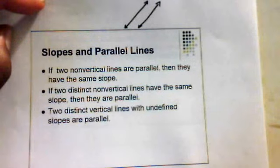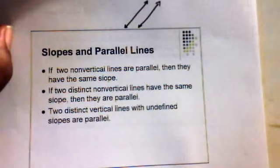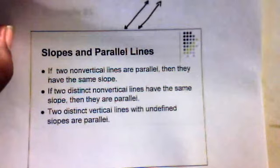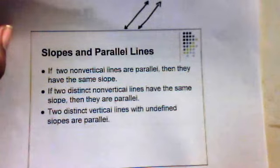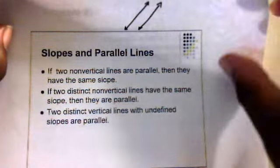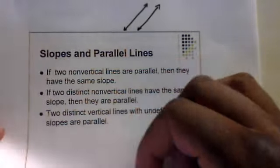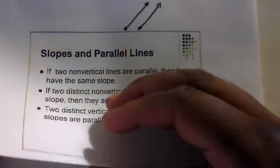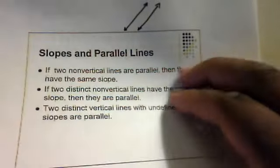With undefined slopes, that means the line is going to be vertical. And if you have two vertical lines, they both have undefined slopes. That means that the two lines aren't going to intersect each other — that means those lines are parallel. Now let's look at an example that deals with this concept of parallel lines and their relationship with slopes.